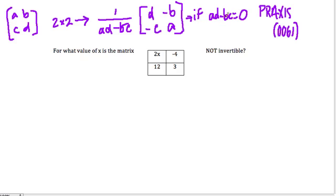So if AD minus BC is 0, then you can't have an inverse. And actually, we call AD minus BC the discriminant.